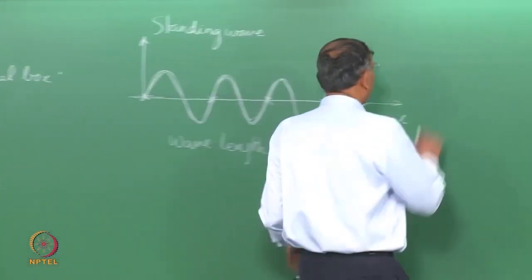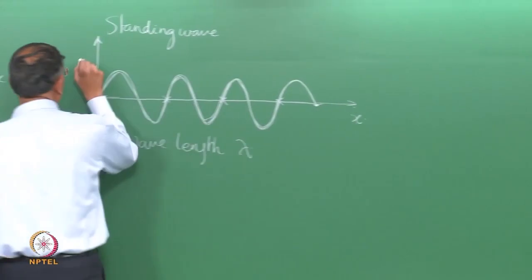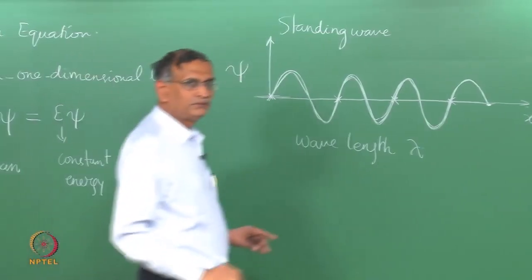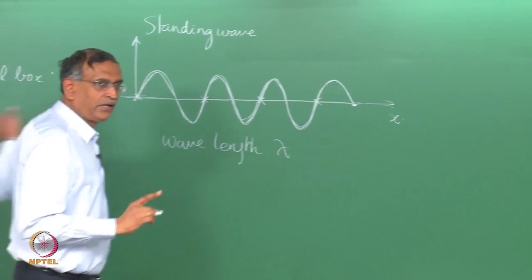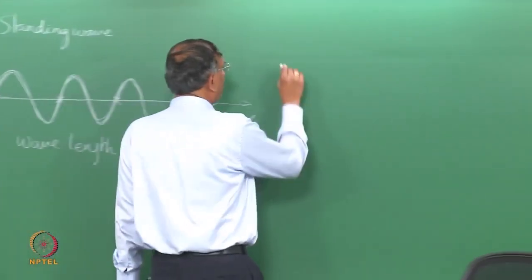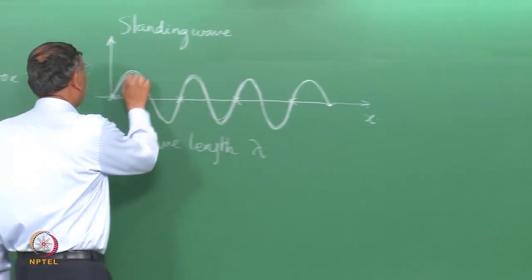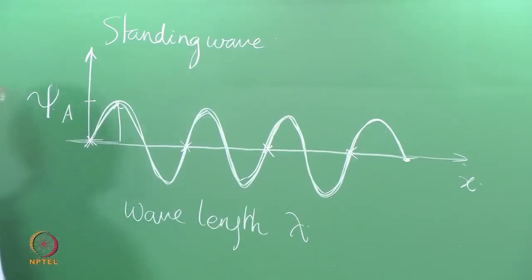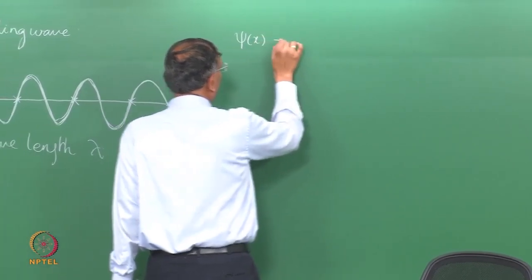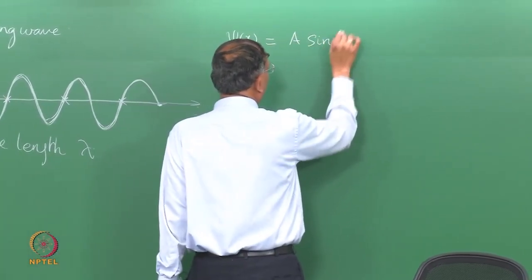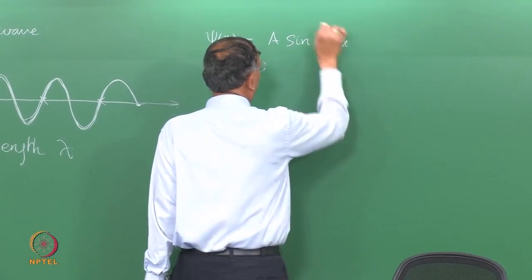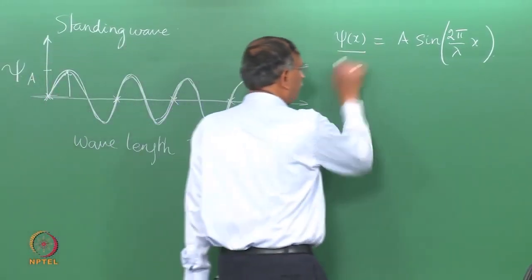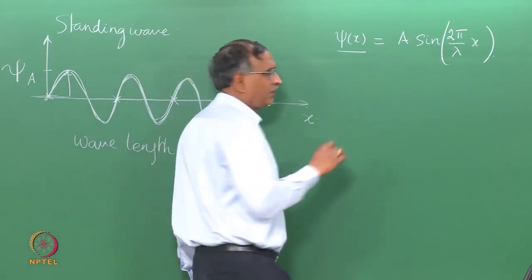The equation for the standing wave amplitude — let us call that amplitude psi, consistent with what we have here — will be seen later that this psi is not necessarily the same as the quantum mechanical psi. But for this wave function, if we have the maximum amplitude as A, then psi of x is written as A sin(2π/λ · x). This is the familiar standing wave form. When you differentiate twice, it satisfies a derivative equation.